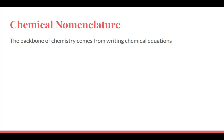So what is this lesson all about? This lesson is about chemical nomenclature. The backbone of chemistry comes from writing chemical equations, and to write these chemical equations you need three things: you need to know how to determine a chemical formula, you need to know how to name ionic and covalent compounds, and you need to learn how to write and balance chemical equations. We will be doing the balancing portion in a different lesson — today is just about nomenclature and formulas.